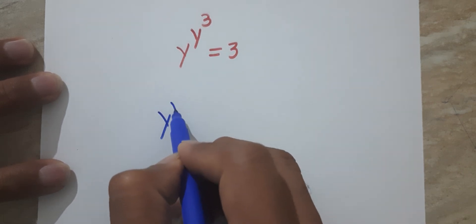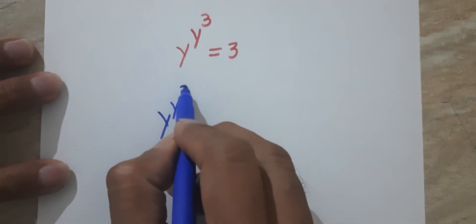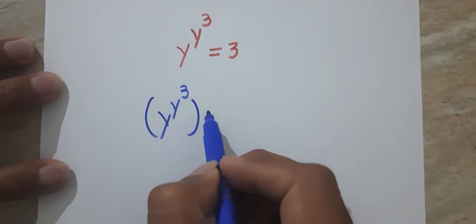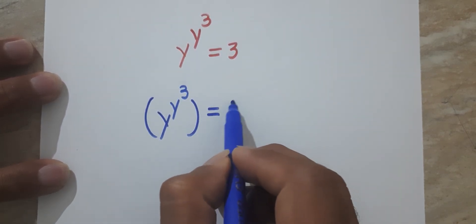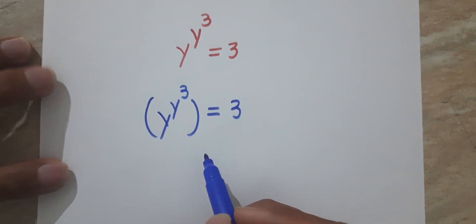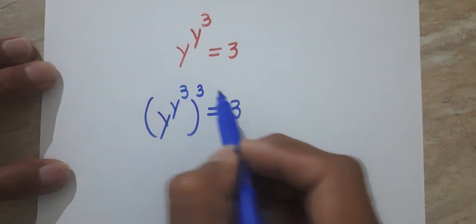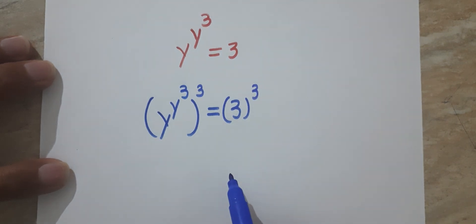Given: y^(y³) = 3. What we will do is apply cube to both sides.